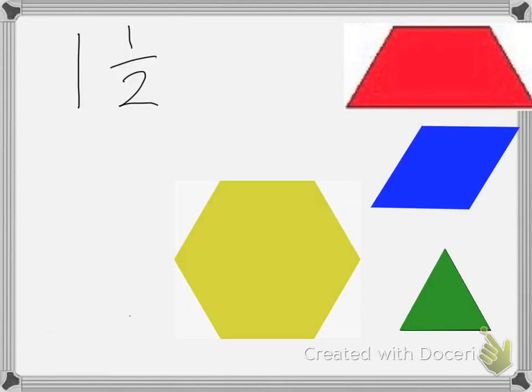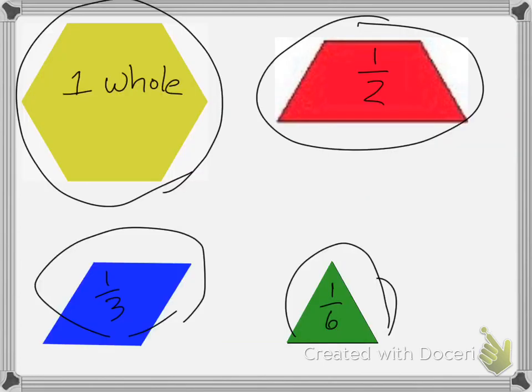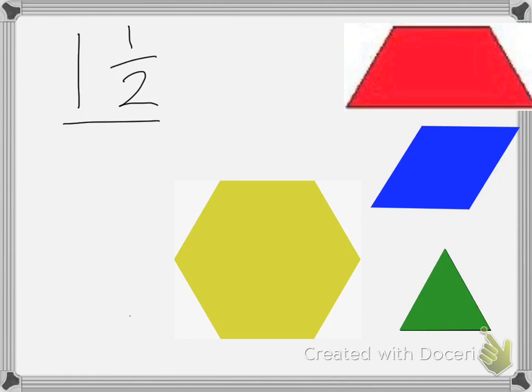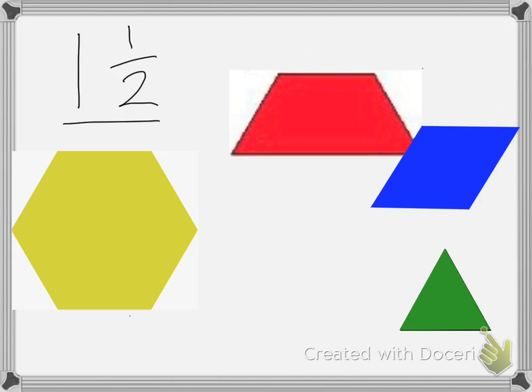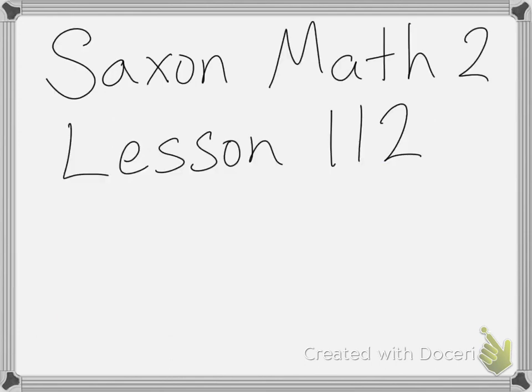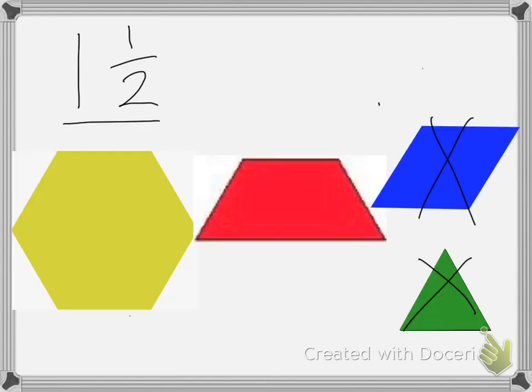I have this mixed number up on the board. It says 1 1/2. If I wanted to show that using pattern blocks, remember that 1/2 of a shape is going to be the red one, and one whole is the yellow one. So if I wanted to show that, I would use one yellow pattern block and one red pattern block to show 1 1/2. I wouldn't use the blue or the green. That's it for this lesson. Good luck on your homework.